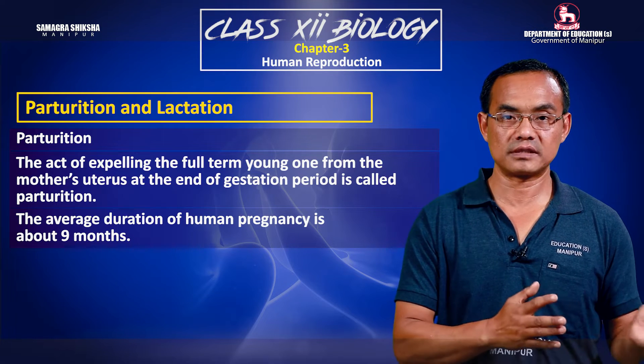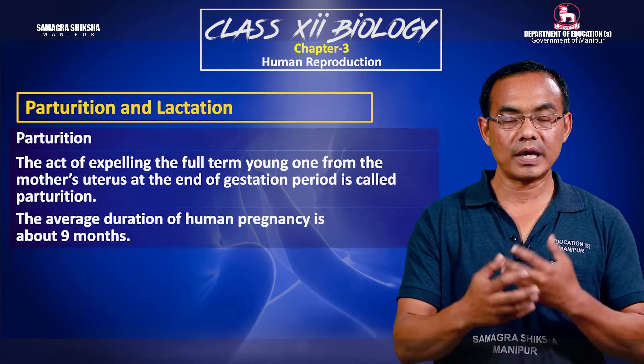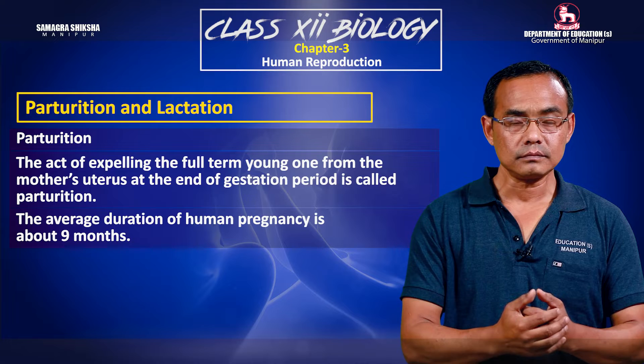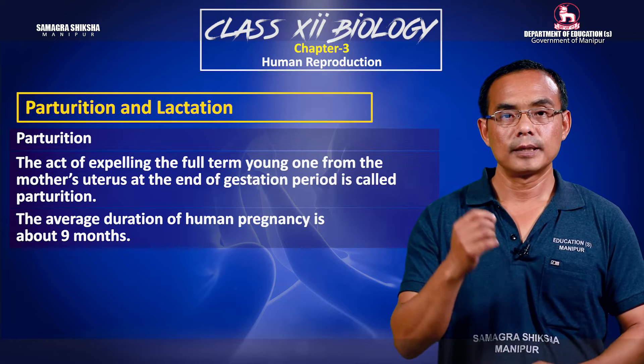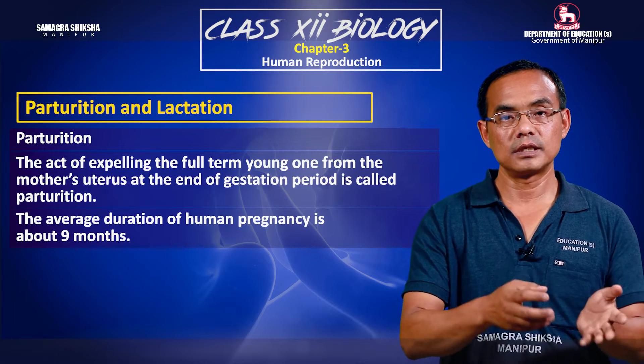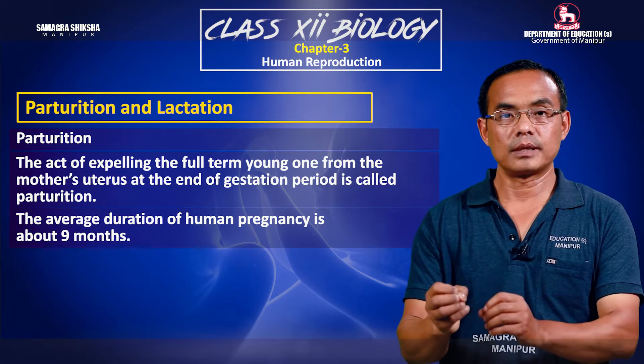The gestation period, or pregnancy period, is 40 weeks or approximately 9 months. During this time the baby develops inside the mother's womb.